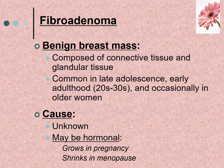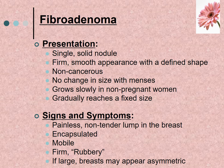Fibroadenoma is a benign breast mass composed of connective tissue and glandular tissue. It is common in late adolescence and early adulthood, the 20s and 30s, and occasionally in older women. The cause is unknown, but it may be hormonal because it grows in pregnancy and shrinks in menopause.